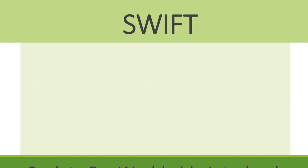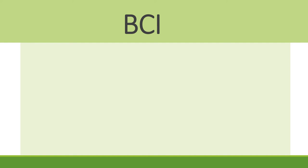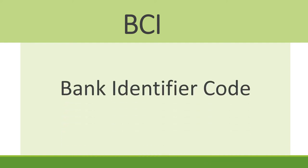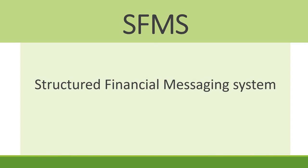The next term is SWIFT. The full form of SWIFT is Society for Worldwide Interbank Financial Telecommunication. It is an 8 or 11-character code which helps in international transactions and ensures safe and speedy international payments through the SWIFT system. The next term is BCI. The full form of BCI is Bank Identifier Code. The next term is SFMS. The full form of SFMS is Structured Financial Messaging System.